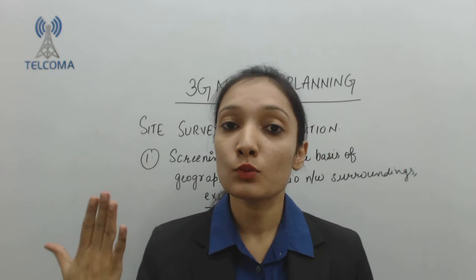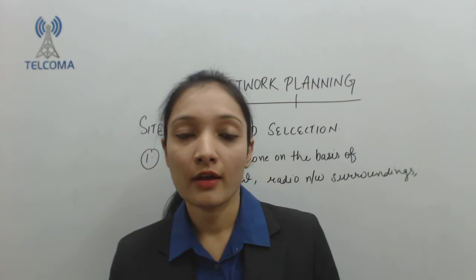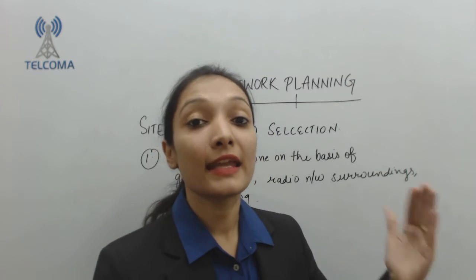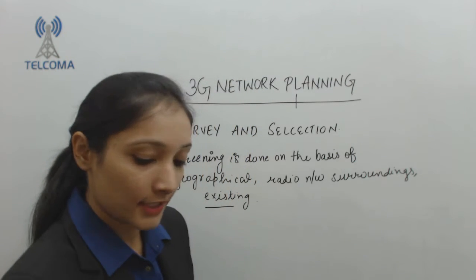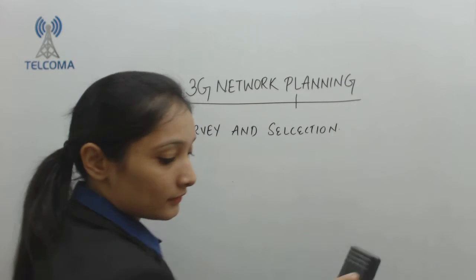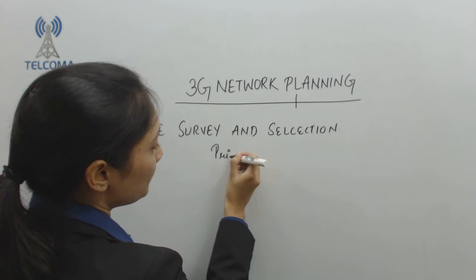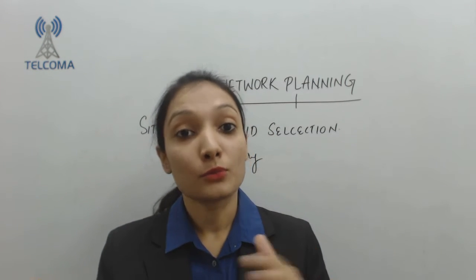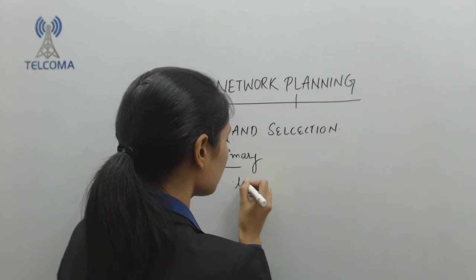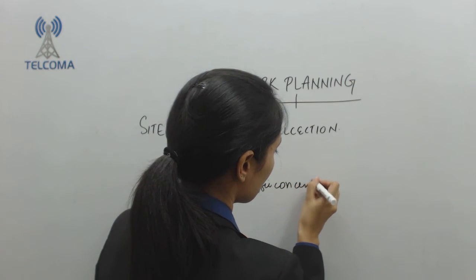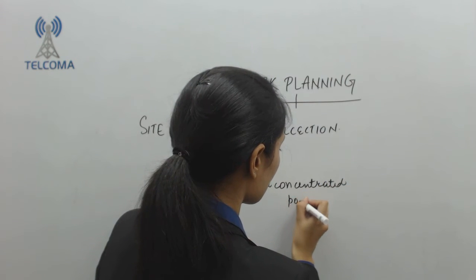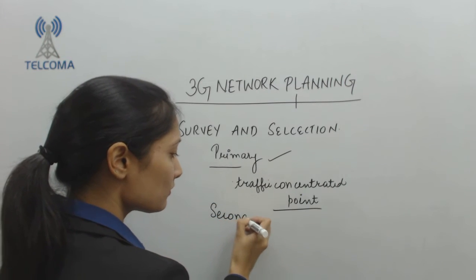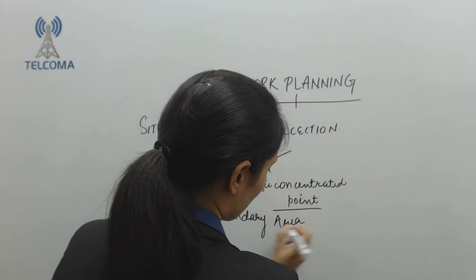When deploying a site, we first need to see what kind of area we are working in — whether it is an urban area, suburban area, or open area. The deployment process is carried out accordingly. First, we decide the planning for that area to cover it effectively. We prioritize covering primary areas first — for example, if the area is densely populated like a market or street area, more sites need to be planned at traffic-concentrated points.